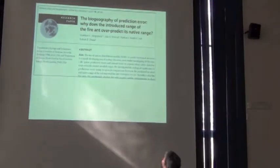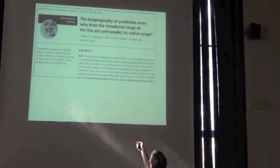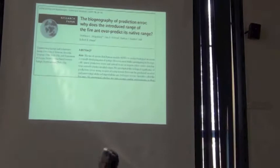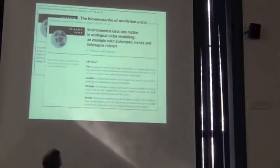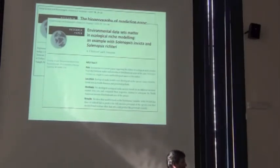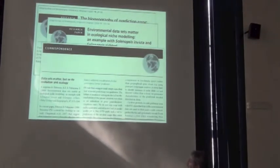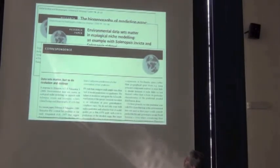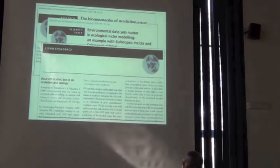Let's look at another example. We have this: Why does the introduced range of the fire ant overpredict its native range? And the clear inference is that niches have changed during the invasion process. And so with one of my former students, I put together a reanalysis of the situation. But I hate to say it, but the authors came back and argued, data sets matter, but so do evolution and ecology. But watch what the reanalysis of this paper showed.